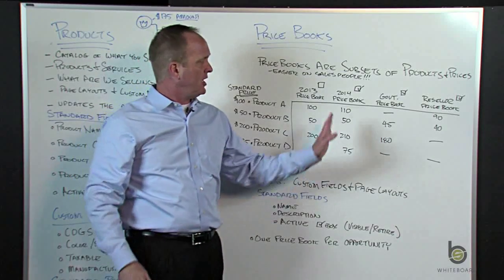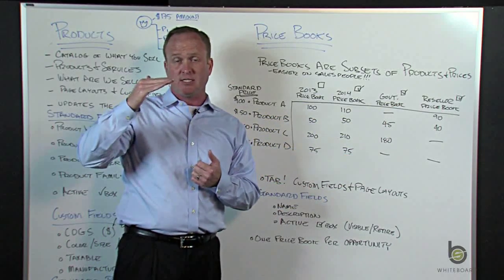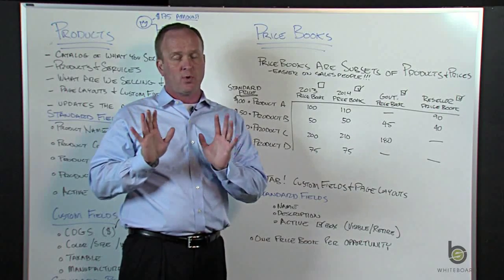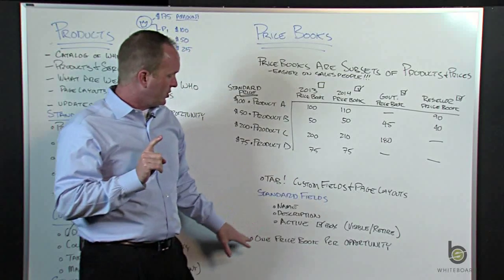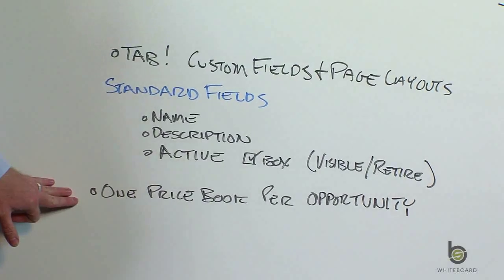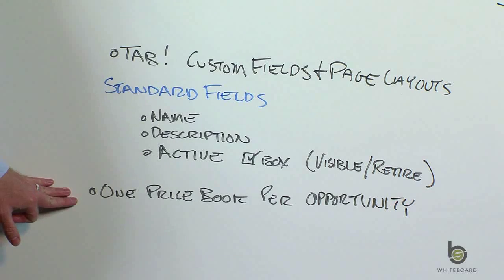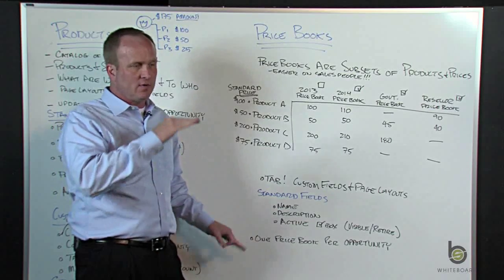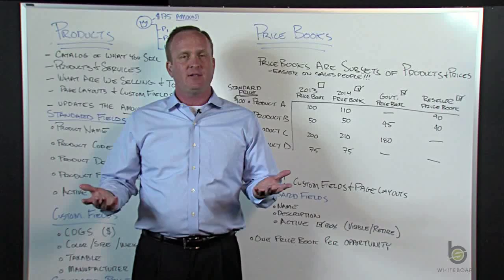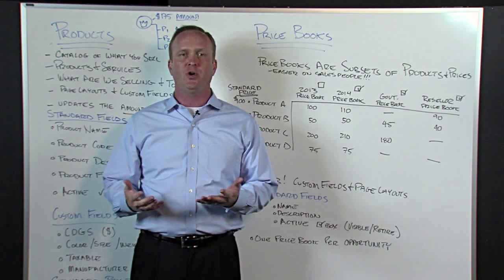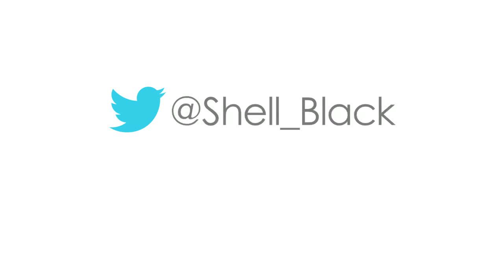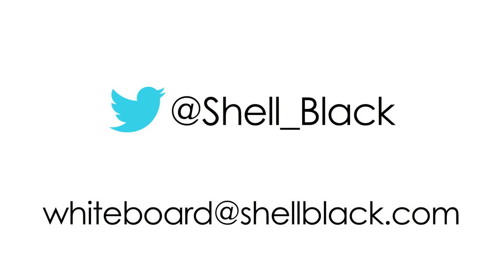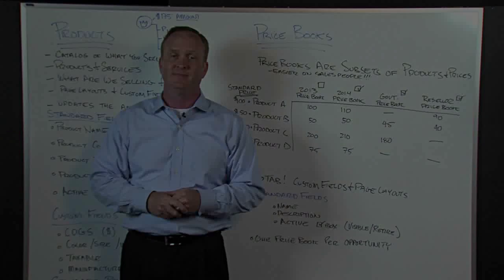When you kick off an opportunity and have multiple active price books, you'll get a picklist that asks which price book you want to use for this opportunity. You can only use one price book per opportunity. As a salesperson, you can't cherry-pick one product out of the government price book, another out of the reseller price book, and another out of the 2014 price book — you have to use a single price book on an opportunity. That wraps up our segment on products and price books. If you want to give feedback, you can reach out on Twitter at shell_underscore_black, or email whiteboard@shellblack.com. Thanks for joining us and we'll hope to see you soon.